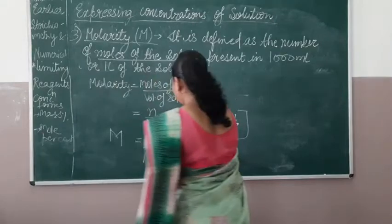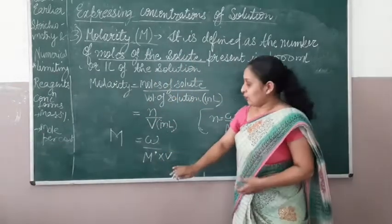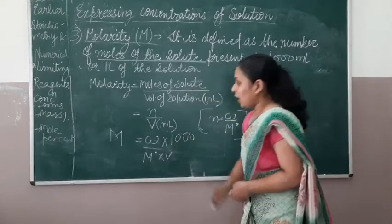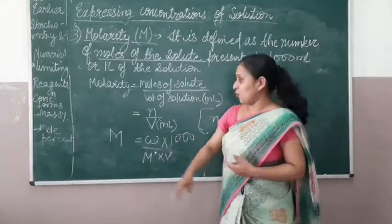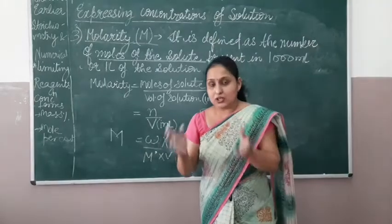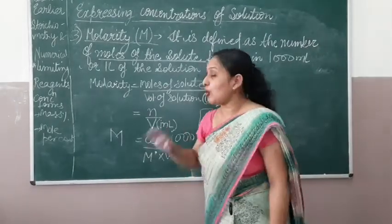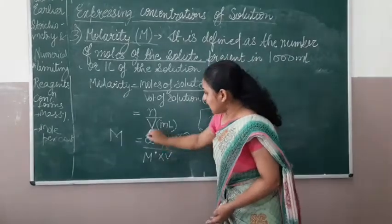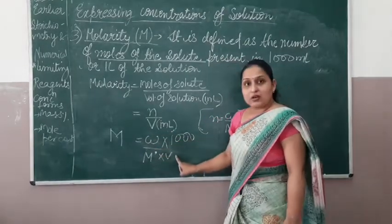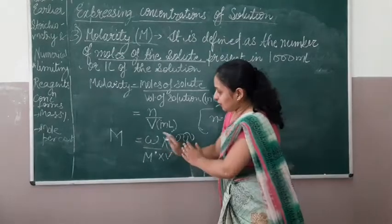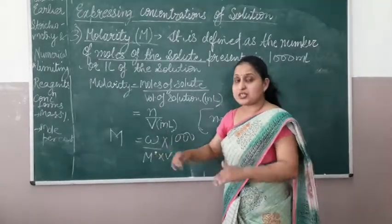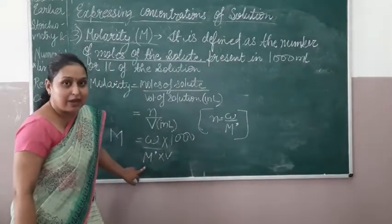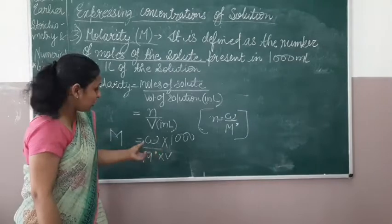Coming to the numerical of molarity: calculate the molarity of NaOH in a solution prepared by dissolving 4 grams in enough water to form 250 ml of solution. The solute is NaOH, present in 4 grams. The formula is molarity = W / (M' × V). Number of moles = given mass / molar mass. We elaborate N as W upon M'. The molar mass of NaOH is calculated by adding atomic masses: Na + O + H = 23 + 16 + 1 = 40 g/mol.